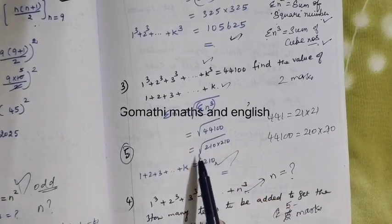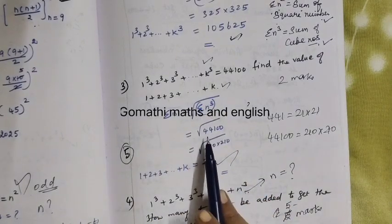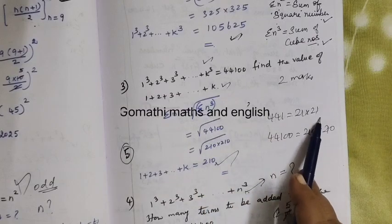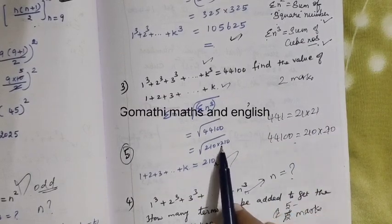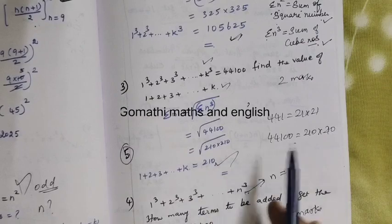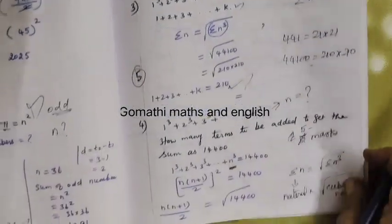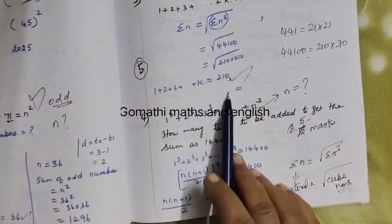Root of sigma n cube equal to 441 and 21 into 21. So root of root you are taking. So 1 plus 2 plus 3 etc. k equal to 210.